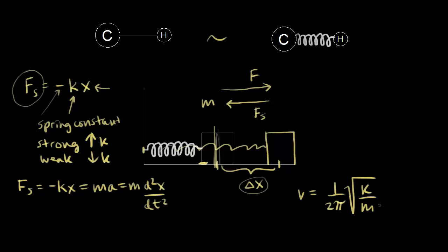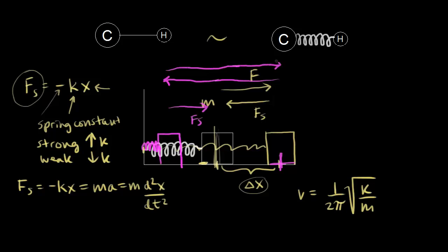The frequency of oscillation refers to what happens when you pull the box to the right and release it. The spring force causes it to move left, it keeps going due to energy, compresses the spring on the other side, and then the spring pushes it back. That's one oscillation. The time it takes for one full oscillation is called the period, measured in seconds.